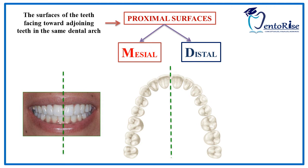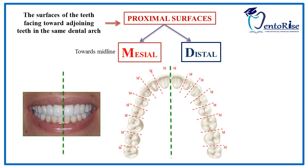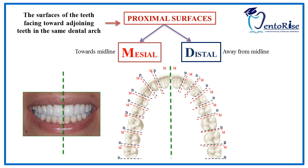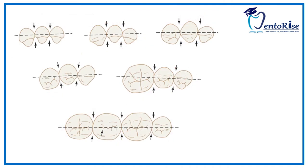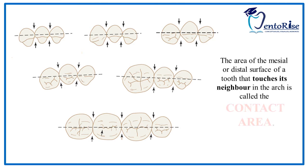Thus, for each individual tooth, the proximal surface which faces towards the midline is called the mesial surface, demarcated for each tooth in the figure with the help of a red line. The proximal surface which faces away from the midline is called the distal surface, demarcated for each tooth in the figure with the help of a blue line. Thus, the distal surface of one tooth contacts the mesial surface of the other tooth. This point of contact is called the contact area.